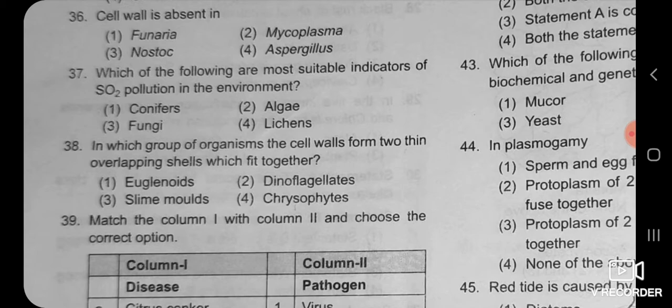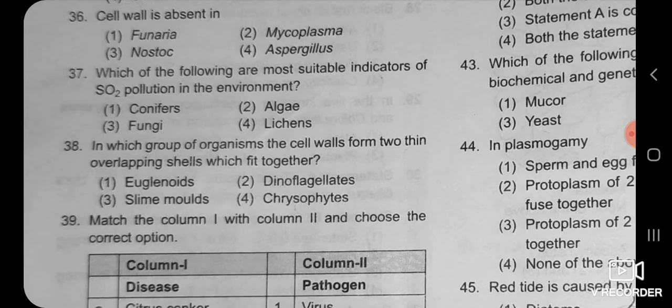Finaria is an example of the plant kingdom. Mycoplasma — we have seen that it is the smallest cell without any membrane, meaning it is without cell wall, and is an example of kingdom monera.